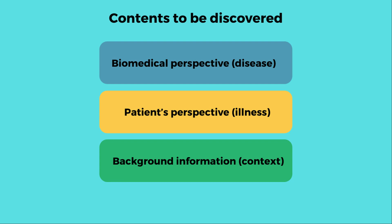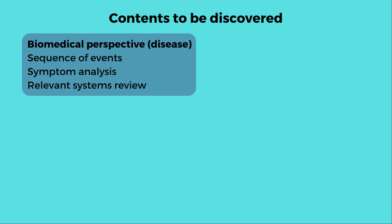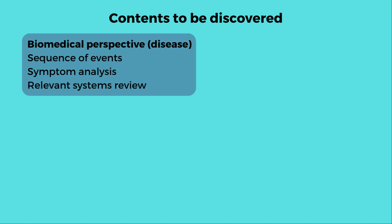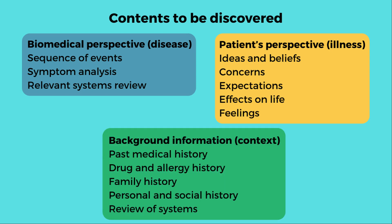The content to be discovered can be divided into three groups. The first is the biomedical perspective — this covers the disease, sequence of events, symptom analysis, and relevant systems review. The second is the patient's perspective, also known as illness — this consists of exploring the patient's health belief system: their ideas and beliefs, concerns, expectations, effects on life, and feelings. The third category is background information, which gives context: past medical history, drug and allergy history, family history, personal and social history, and review of systems.